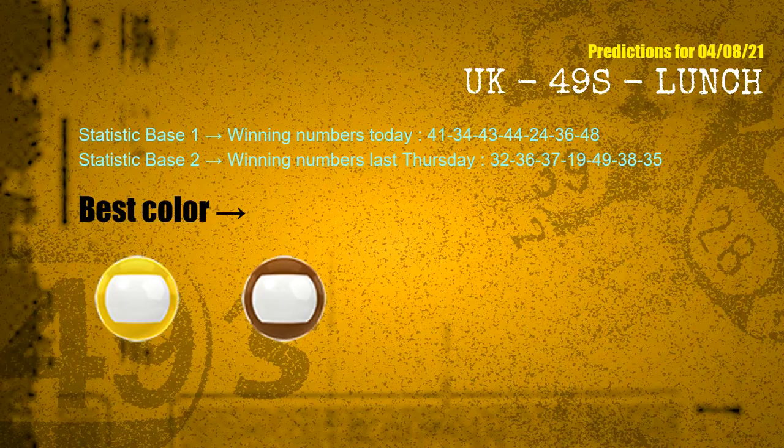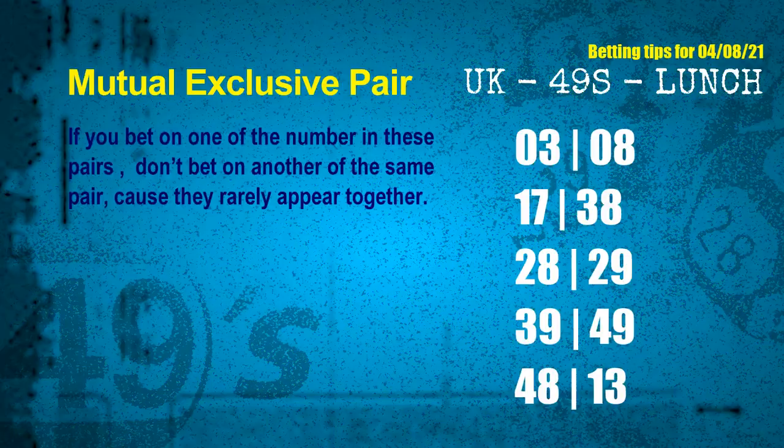According to the statistics above, with today's winning numbers 41, 34, 43, 44, 24, 36, 48, and last Thursday's winning numbers 32, 36, 37, 19, 49, 38, 35 — the frequent following colors are yellow and brown. Now we have some following ones and ball colors. Here are some tips to increase your hit odds, such as mutual exclusive pairs.